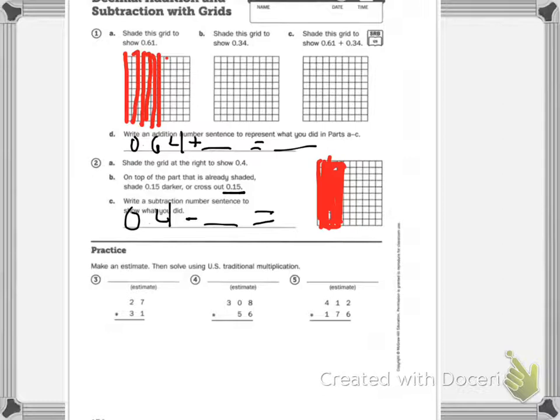Practice: make an estimate then solve using U.S. traditional multiplication. Remember, one through four, round down and turn that number into a zero. Five through nine, we round up and switch whatever number we're looking at.